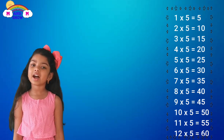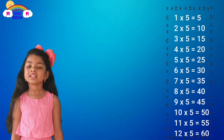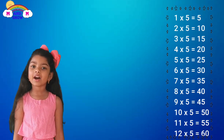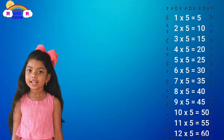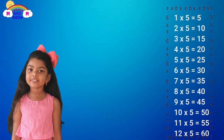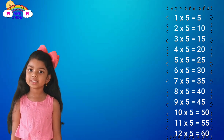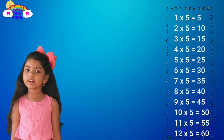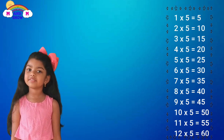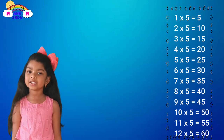Eight time five is forty, nine time five is forty-five, ten time five is fifty, eleven time five is fifty-five, twelve time five is fifty-five.